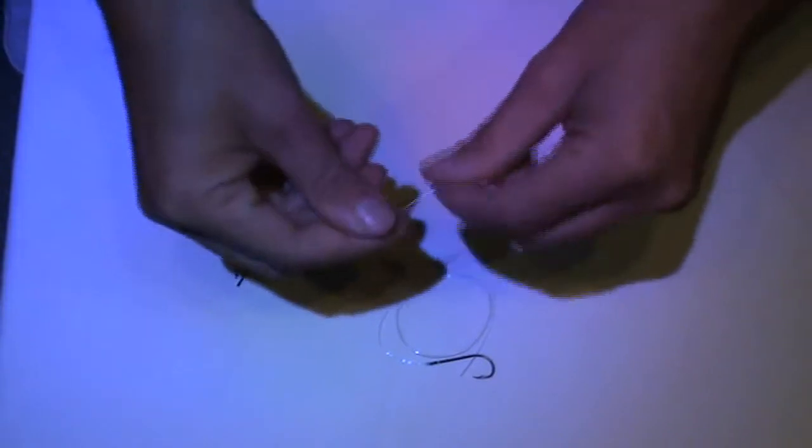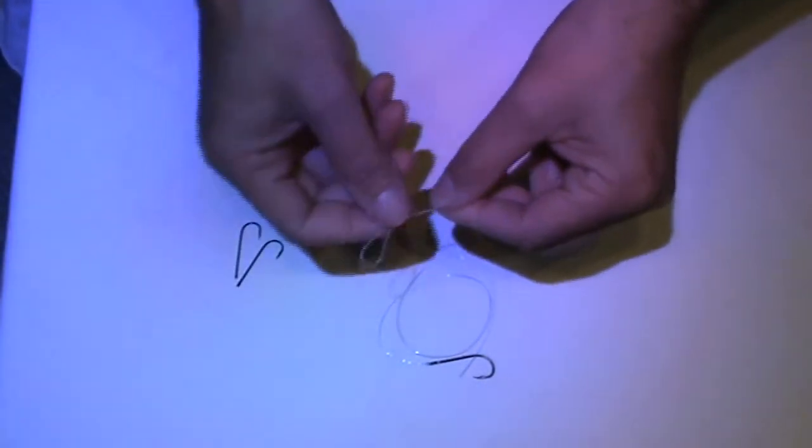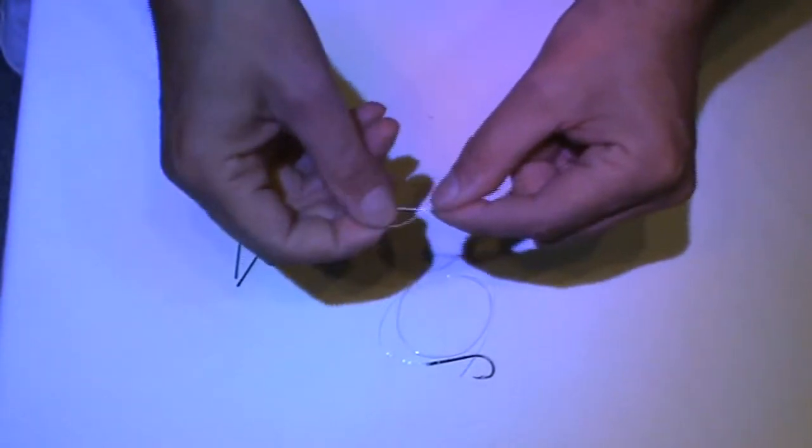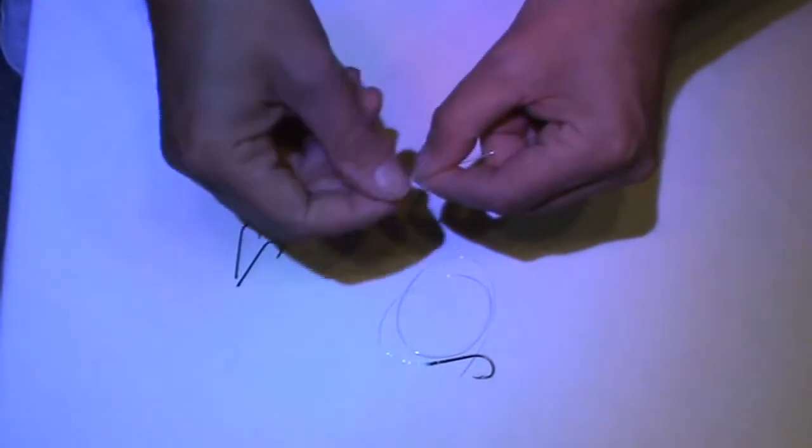Today we're going to be talking about how to catch black bream. Now I normally set up a rig or tackle like this. I start off with a bit of line and I put a loop in it. This loop will go to your main line which will have a clip swivel on. You just clip straight onto that.